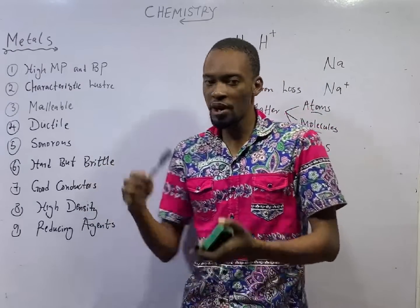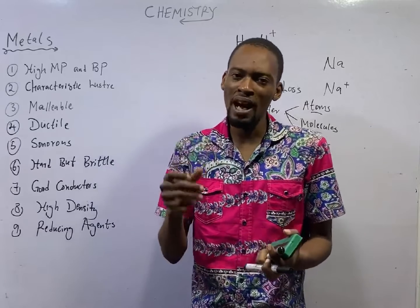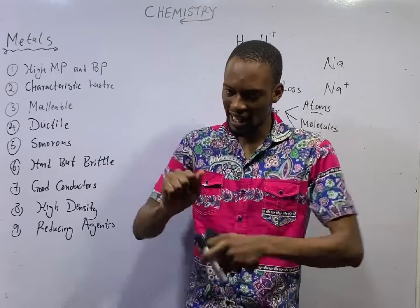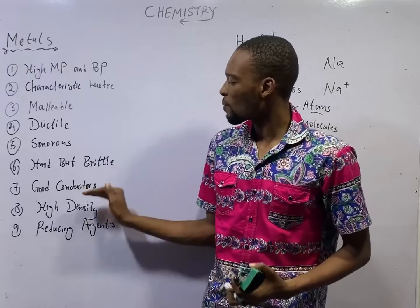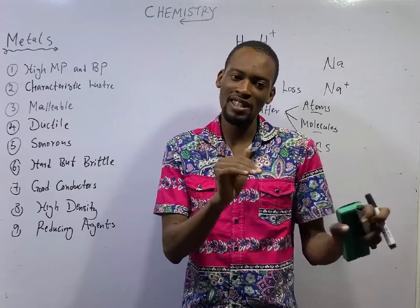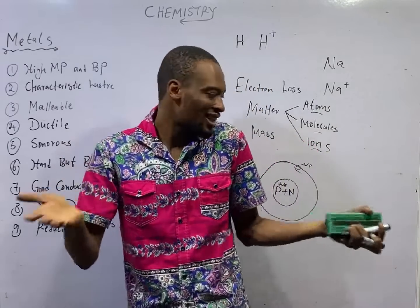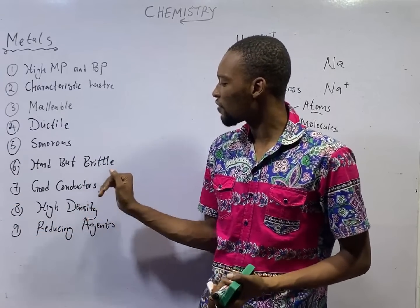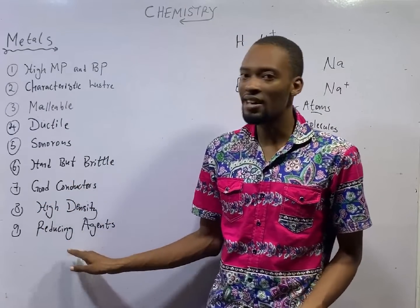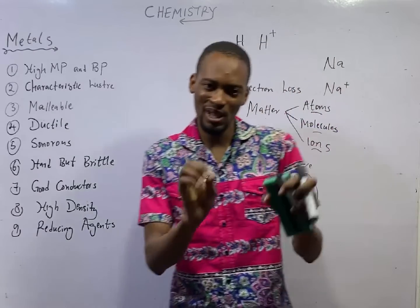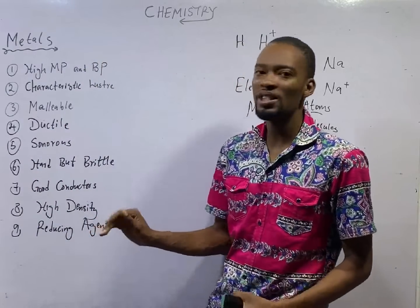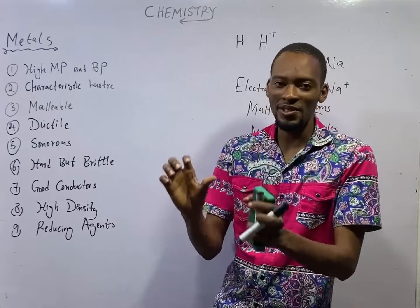Metals should be sonorous — when you hit a metal, you should hear a sound. Metals must be hard. Metals are good conductors of heat and electricity — they allow electricity to pass through them easily because they have low resistance, and they allow heat to pass through them. Metals have high density — density is mass over volume. And finally, metals are reducing agents. In a redox reaction where oxidation and reduction are taking place simultaneously, the metal is the reducing agent because it is the one that is oxidized.